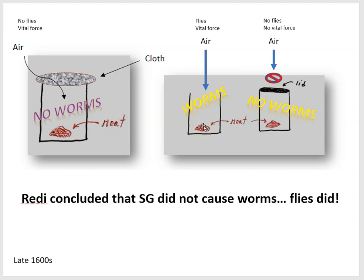So that would be the source of these worms. To test this idea, we might imagine putting a lid on the jar. And sure enough, when you put a lid on the jar that has meat, you get no worms.